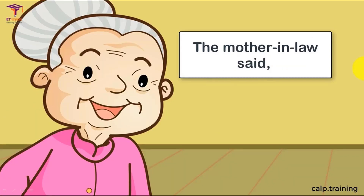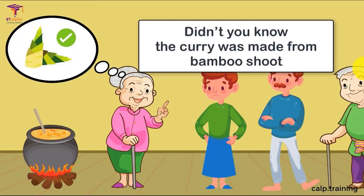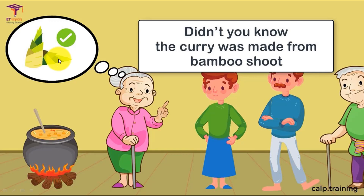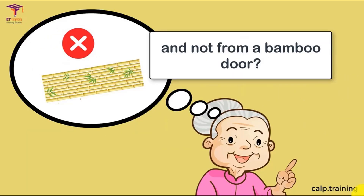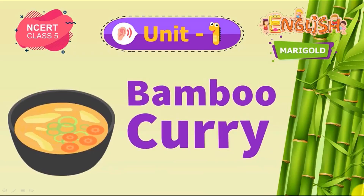The mother-in-law said, 'Didn't you know the curry was made from bamboo shoot — not from a bamboo door?' She explained that 'shoot' means the young branch or sprout of bamboo. So that was the story of bamboo curry. Hope my explanation was clear to you. Keep watching Kalp videos, thank you.